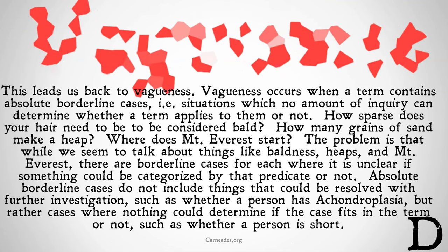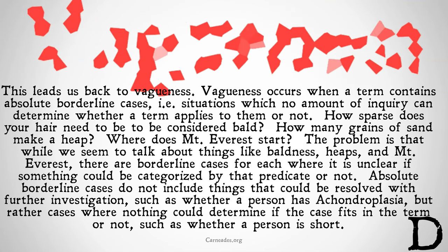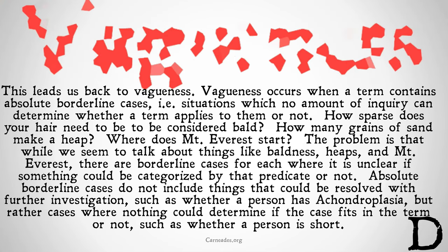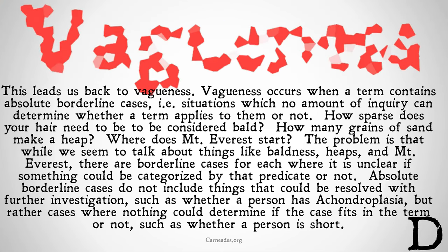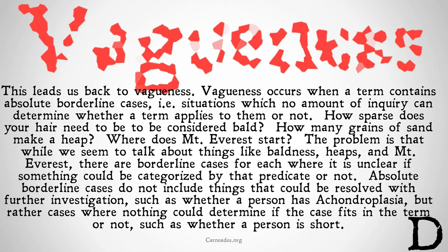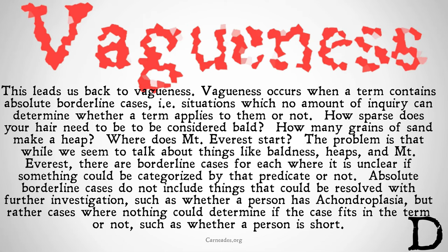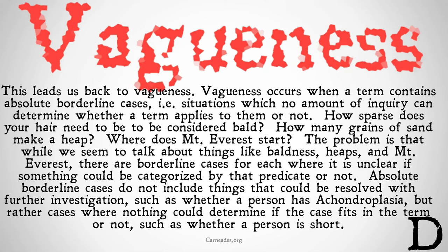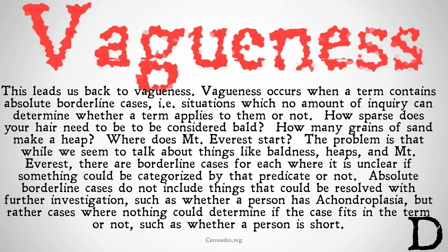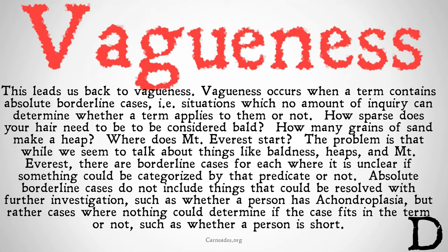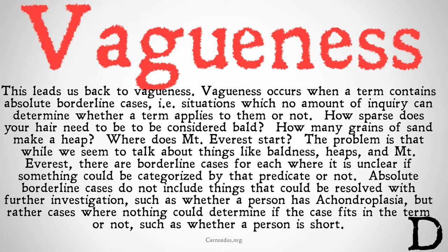This leads us back to vagueness. Vagueness occurs when a term contains absolute borderline cases — in other words, situations where no amount of inquiry can determine whether the term applies or not. How sparse does your hair need to be to be considered bald? How many grains of sand make a heap? Where does Mount Everest start? The problem is that while we talk about things like baldness, heaps, and Mount Everest, there are borderline cases for each where it's unclear if something could be categorized by that predicate or not.